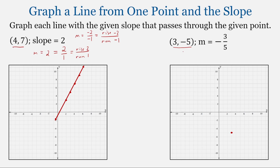Now let's look at that slope. I'm going to rewrite the slope with the negative value on top: negative 3 fifths. So we will rise negative 3 — go down 3 — and run 5. From our starting point, we go down 3 and run 5. If I try that again, I will fall off my graph — I can only go about 3 spaces to the right. So I can't get another point in this direction on this particular graph.